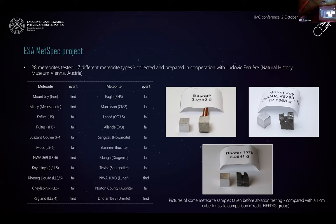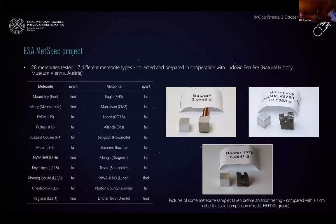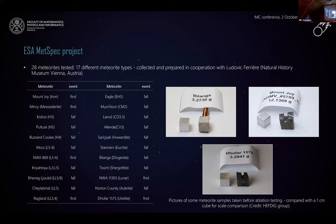Samples were attached by a copper screw to the holder in the plasma wind tunnel. The selection of these meteorites focused mainly on falls rather than finds, to have less weathered samples or samples less affected by terrestrial weathering.